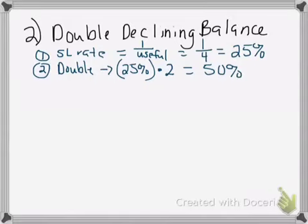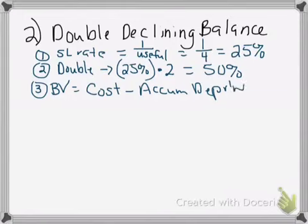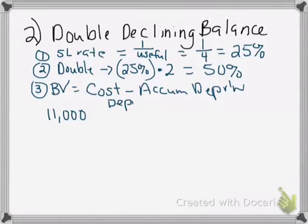With double declining balance, we do not use the salvage value upfront. What we look at is the book value, which is the cost minus any accumulated depreciation taken. In the first year, we haven't taken any accumulated depreciation, so book value is $11,000. We multiply $11,000 by 50% and that gives us $5,500 as year one depreciation.